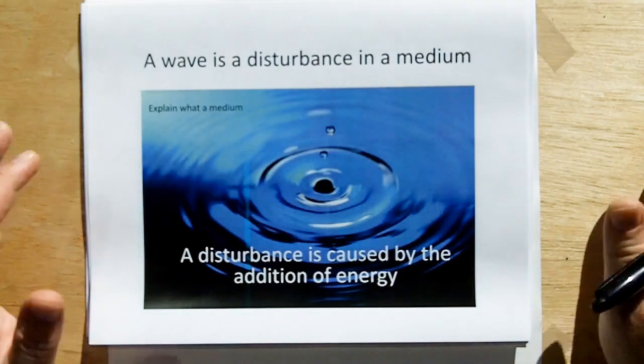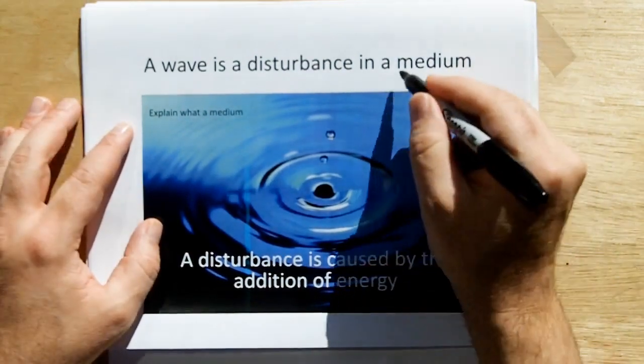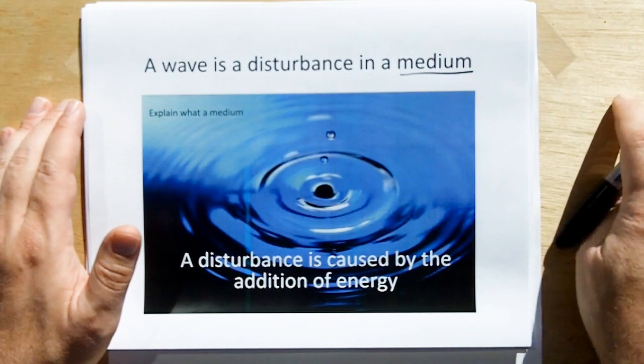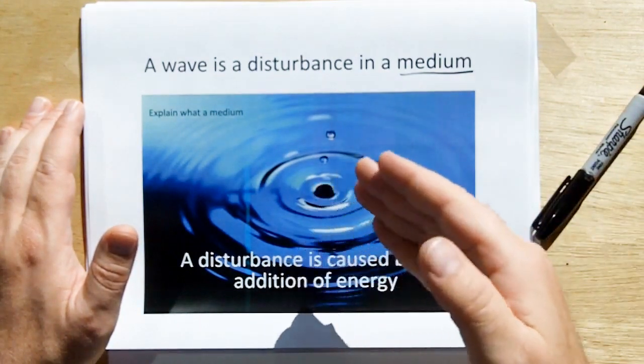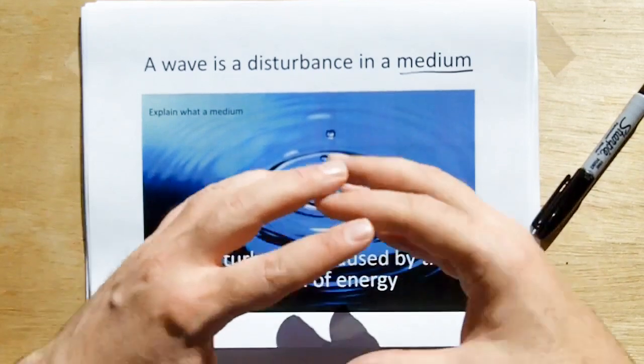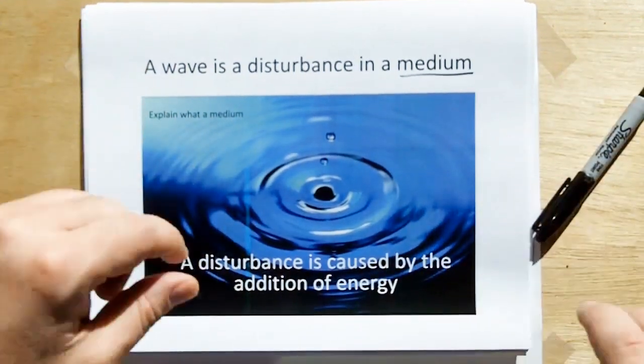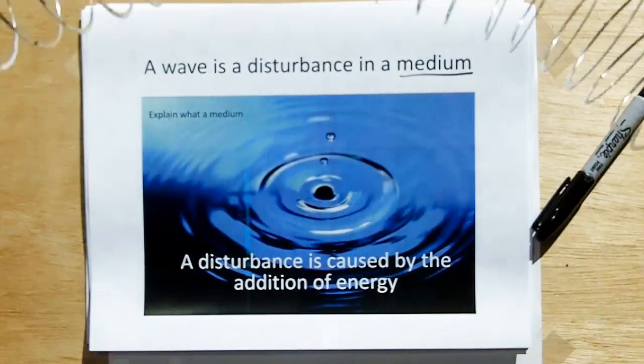So what's a wave? A wave is a disturbance in a medium. A medium is the material that carries the wave. For example, water waves travel in the medium of water. Sound waves travel in the medium of air. String waves travel on the medium of string. Slinky waves travel on the medium of slinkies.